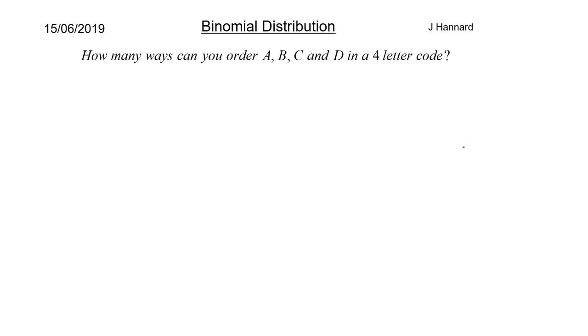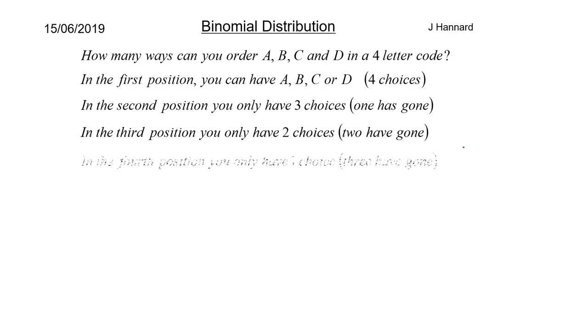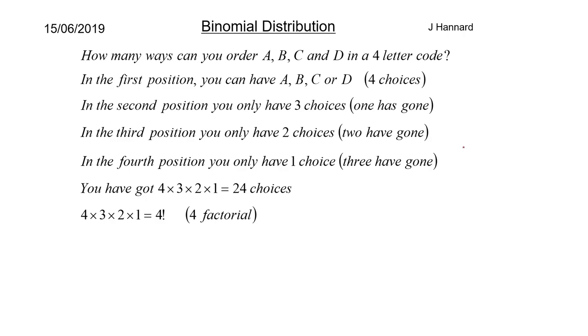How many ways can you order A, B, C and D in a four letter code? In the first position you can have A, B, C or D which is four choices. In the second position you only have three choices, one is gone. In the third position you only have two choices because two have gone. In the fourth position you only have one choice. So you've got four by three by two by one choices which is 24. So that is also equal to four factorial.